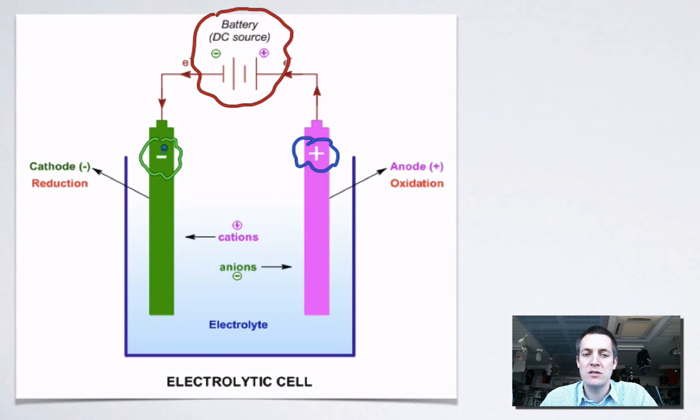Now as soon as these two electrodes become charged if you've got any ions in your electrolyte and if those ions can move, so perhaps your electrolyte has been melted or it's been dissolved in water, then the ions will be attracted to the oppositely charged electrodes.